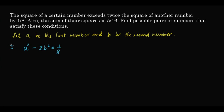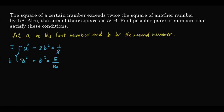And then the sum of their squares is 5 over 16, so a squared plus b squared is equal to 5 over 16. This is the second equation. The idea is to find the values of a and b.